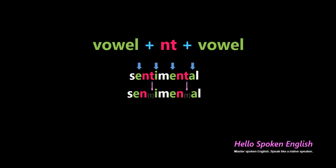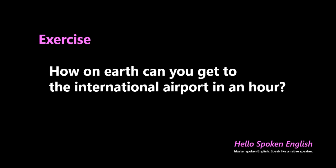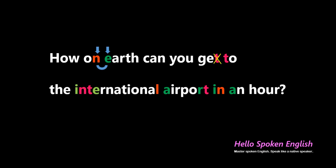Let's take a look at it in more detail in an exercise. I will say a sentence three times — please tell me what I said: 'How on earth can you get to the international airport in an hour?' I said, 'How on earth can you get to the international airport in an hour?' — 'on earth,' 'get to,' the nt sound is between vowels: 'international.' 'International airport in an hour.'